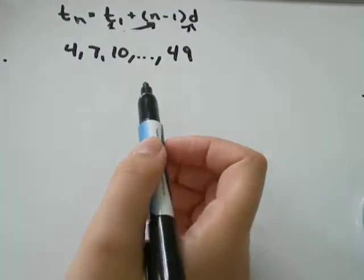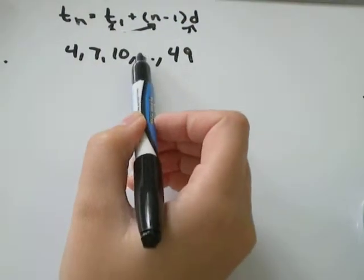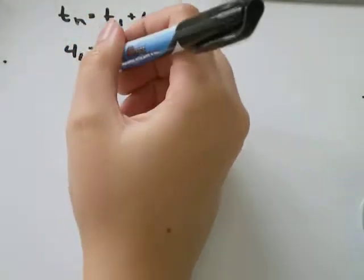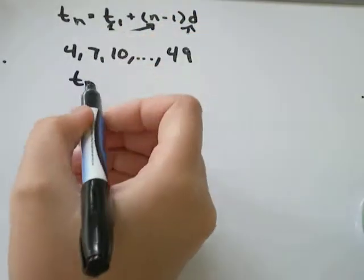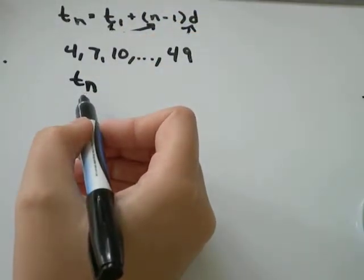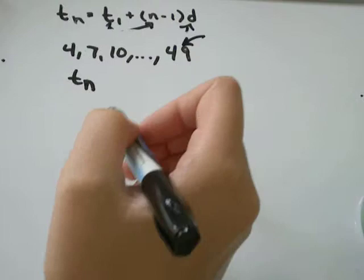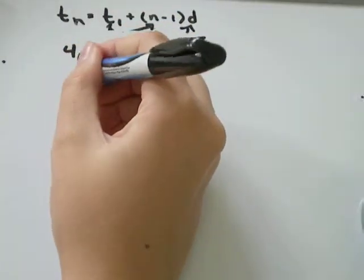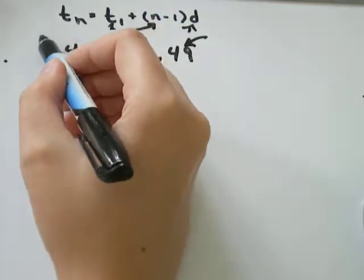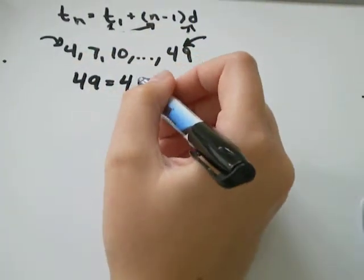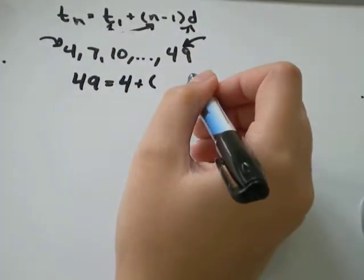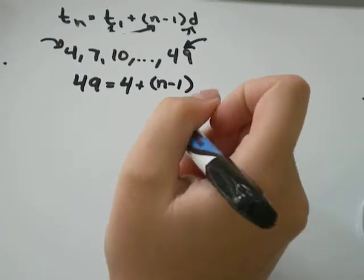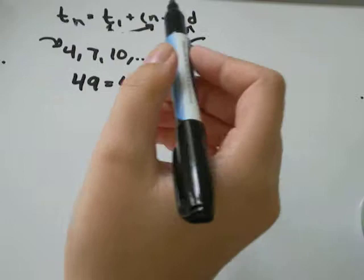And we want to find out how many numbers does the dot dot dot represent. And so we'll use this formula again. T_n can also stand for just the last term. So in this case, T_n is equal to 49. T_1 is the first term, 4, plus n minus 1. It's actually n that we're solving for. n will be the number of terms.